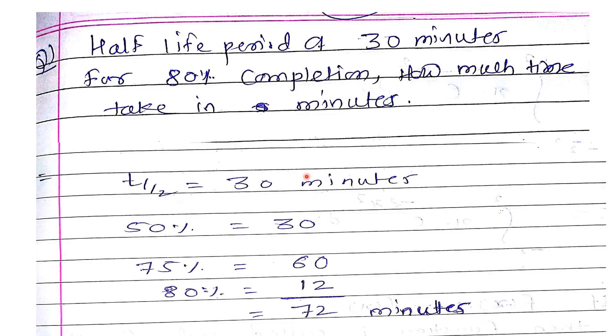If initially it's 100%, now it is 50%, so it will take 30 minutes. After that, 50% is there. If 50% is going to half, that means 75%, it will also give 30 minutes, so 60 minutes total.